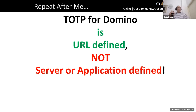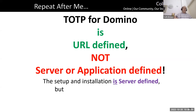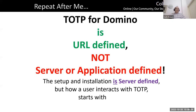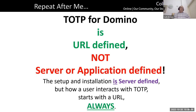I want to make something really clear about TOTP: TOTP for Domino is URL-defined. It's not server or application defined. However, the setup and installation is server-defined. How a user interacts with TOTP starts with a URL — always, every time. There is no other way to do this. So the simple answer when someone asks if we need TOTP across the whole server: it has to be installed on an R12 server, but it's URL-defined. The URL lets you into the server, and from there you can point people to whatever you want — the iNotes directory, a login portal, a specific app.